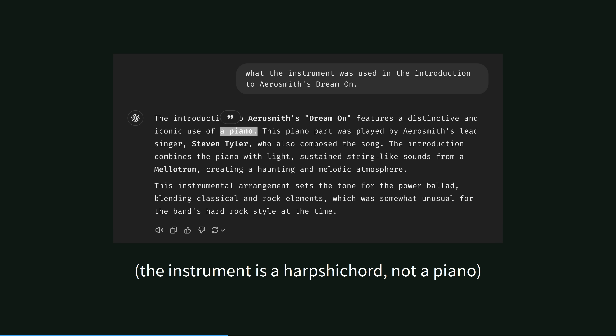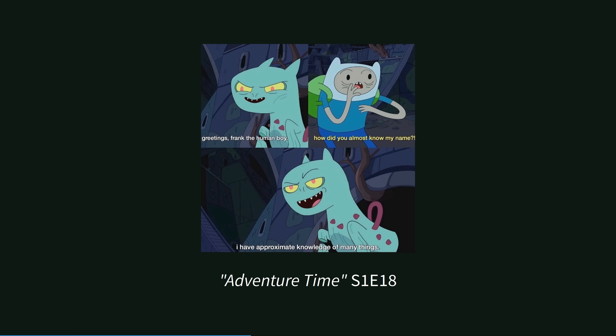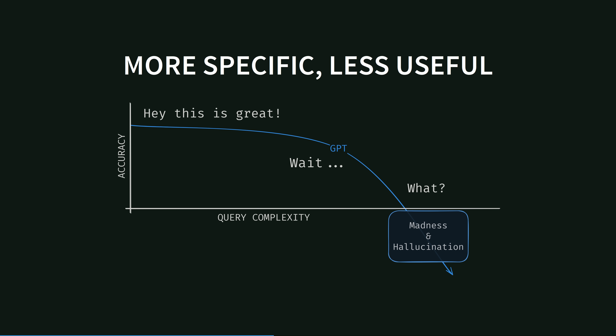ChatGPT 4 got this question partially wrong, and so did Claude at the time of writing. Gemini got the right answer — a harpsichord — but did not also identify the second instrument, a Mellotron, which ChatGPT did. The more specific the answers you want, the less reliable large language models are. It reminds me of the demon cat from Adventure Time, which has approximate knowledge of many things — it's very confident, but often inaccurate. This trend exists across all the GPT tools I've tested, from cloud providers such as OpenAI to running and tweaking my own local models with Ollama. But that's fine — there's so much value on the left side of this graph.